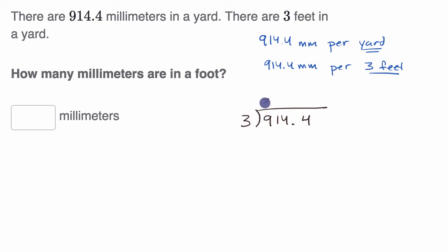Three goes into 914.4. Three goes into nine three times, three times three is nine, subtract, we get a zero, bring down the one, three goes into one zero times, zero times three is zero, subtract, you get a one, bring down that four. Three goes into 14 four times. We're gonna have this decimal right over here. Four times three is 12, subtract, you get a two, bring down this four, you get a 24. And lucky for us, three goes perfectly into 24, eight times, eight times three is 24, you subtract, and we have no remainder. So we have 304.8 millimeters for every foot.